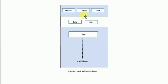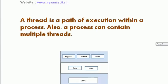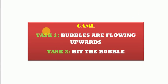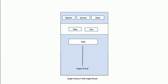What are these things? First is the program counter — the program counter basically keeps track of the instruction to execute. The register holds current working variables. And the stack contains execution history. So data and files are shared between all the threads of one process, but the program counter, register, and stack are not shared. If there are two threads — thread 1 and thread 2 — each will have its own counter, register, and stack, but these two threads can share data and files.